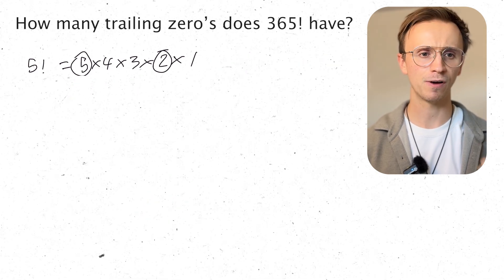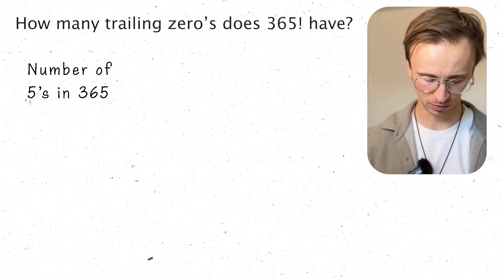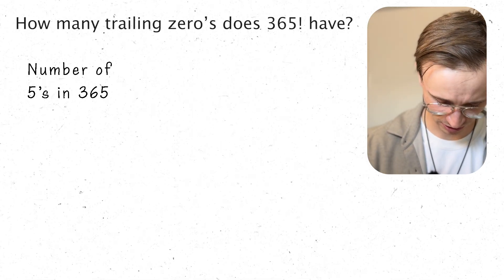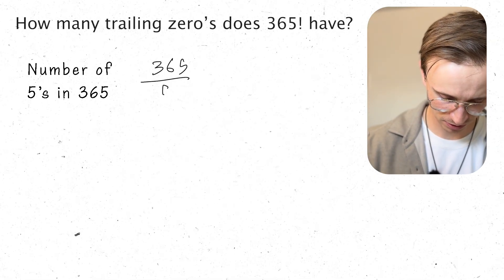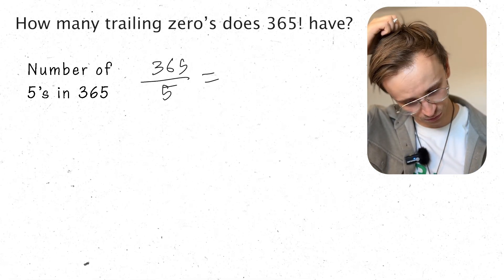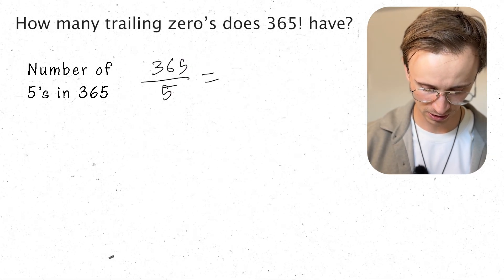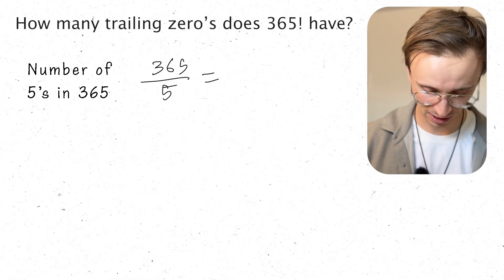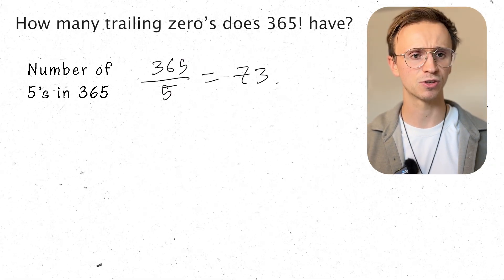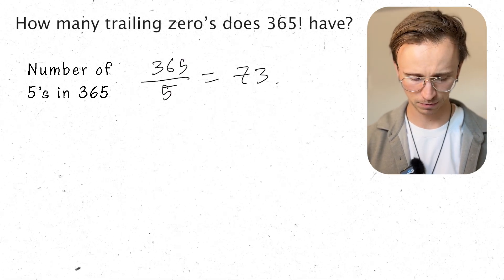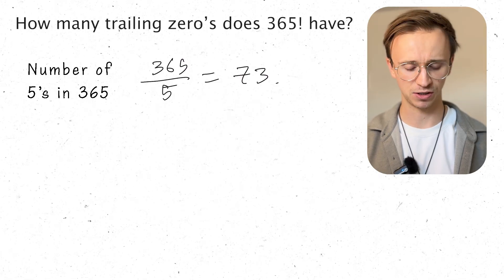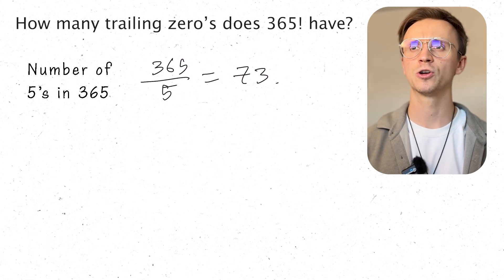Okay, so how many 5s are in 365? Well if I do that division, 365 divided by 5. Well that is, that's 60 plus 12, 13, 60, 73. So 73 of them in there. So that's at least 73 0s. Could I have any more?